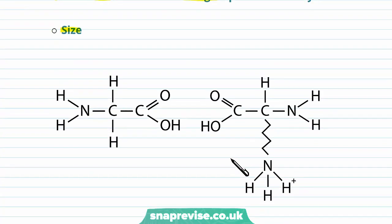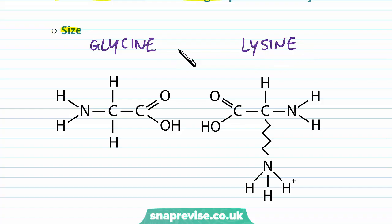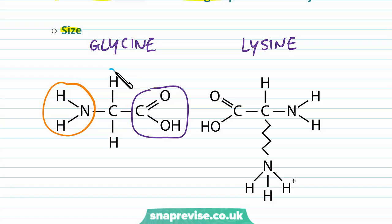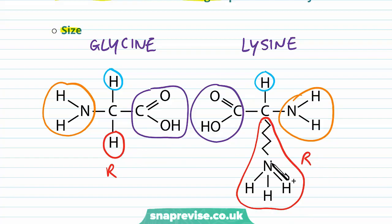First of all, R groups can vary by their size. Here we have two different amino acids — on the left is glycine and on the right is lysine. Don't worry about the structures or the names; this is just to illustrate the differences between R groups. Glycine has the amino group, the carboxyl group, the hydrogen atom, and the R group is simply just an H. Lysine has the same central carbon, amino group, carboxyl group, and hydrogen atom, but a very different and complex R group — a large chain of atoms with an amino group at the end. So size can vary massively between R groups.